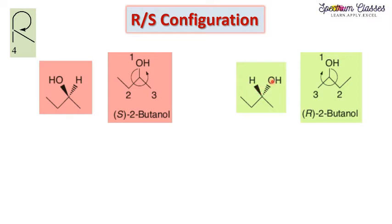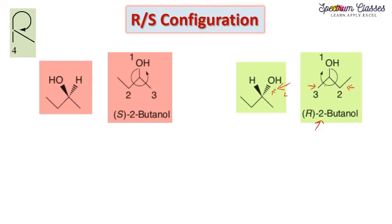There are two ways to handle this. Method 1: suppose you are a viewer standing on the other side of the molecule. If you stand on that side, the dashed wedge becomes solid and the solid becomes dashed. From that perspective your ethyl group is on the right, OH is in front, and methyl is on the left. Rotating 1, 2, 3 from that viewpoint gives a clockwise rotation, so we get R.